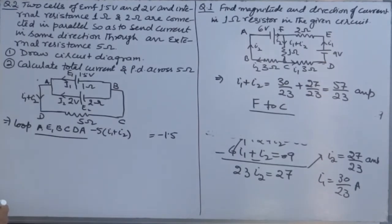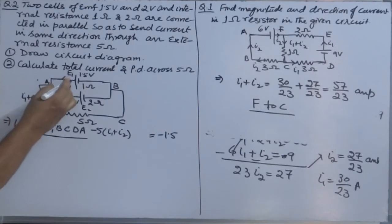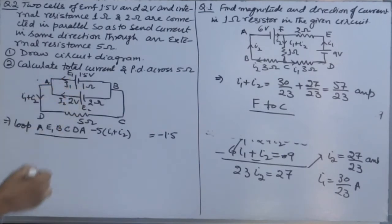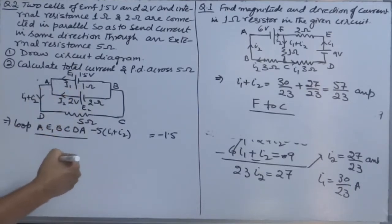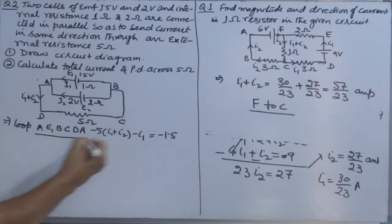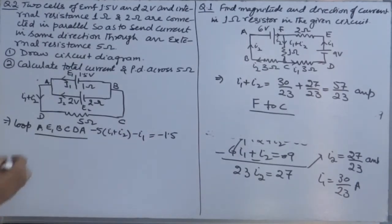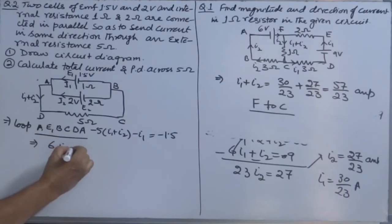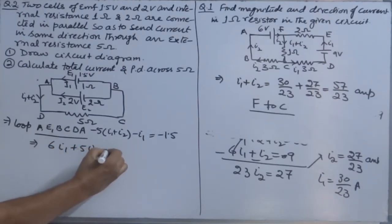The final equation from this loop is: 6I1 + 5I2 = 1.5 volts.